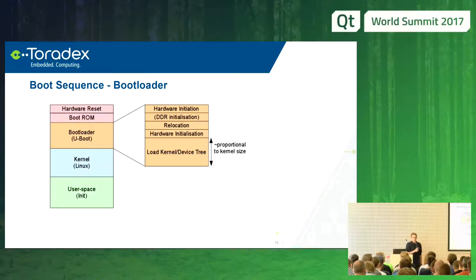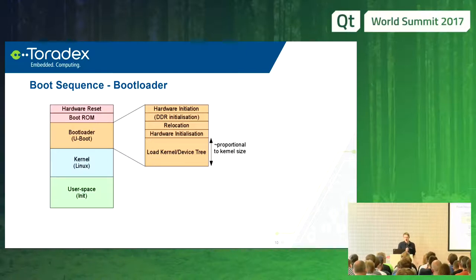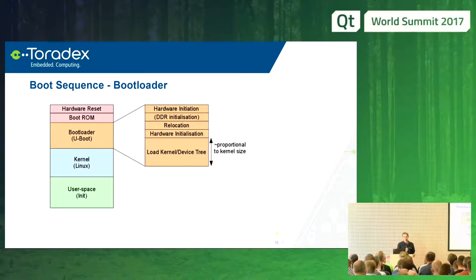After the boot ROM, there's the bootloader, which is often U-Boot. U-Boot initializes a lot of hardware, may do DDR initialization, relocates itself, does more hardware initialization, and loads the kernel and device tree. Loading the kernel and device tree is proportional to their size — the bigger they are, the longer it takes. So optimizing the kernel size also helps reduce the bootloader's boot time.